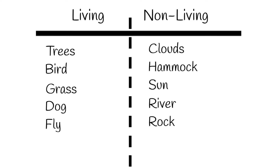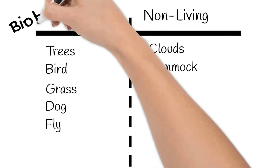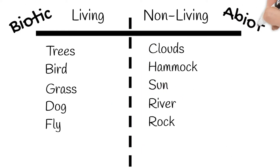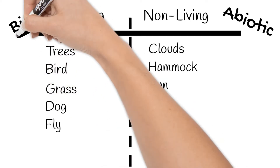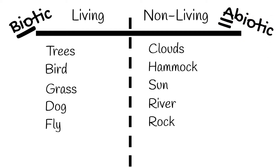In science, we have special names for these: biotic and abiotic. Bio is used in science to mean living. For example, biology is the study of living things. You may have learned in English, when you put an A in front of a word, it changes it to not, or a negative. So abiotic means not living.